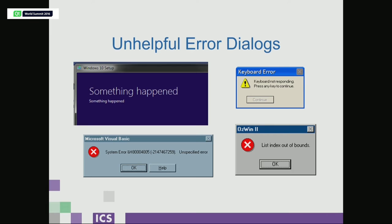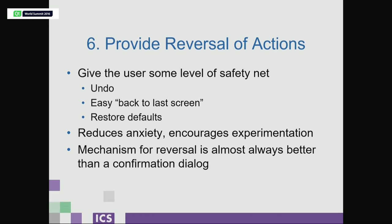Along the same level, giving them a safety net. Rule number six: providing easy reversal of actions — that means undo. Yes, undo is painful to code, but users need it. If you put in undo or some type of safety net — some way to restore defaults — it encourages exploration. The end users will want to use your software; they'll experiment and maybe find that cool Easter egg feature. But if they're afraid of breaking something, they won't want to use it. Having a mechanism for reversal is almost always better than putting up one of those 'are you sure you want to do this?' dialogs — you're just adding clicks. Let them do it, but give them a safety net to go back if they need to.